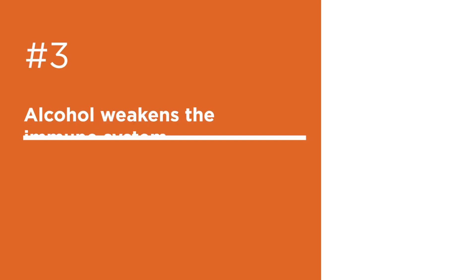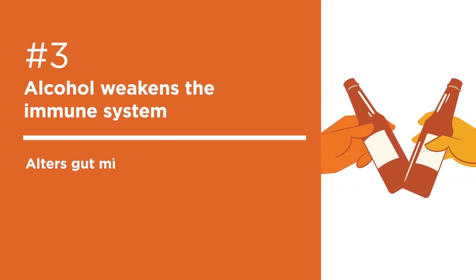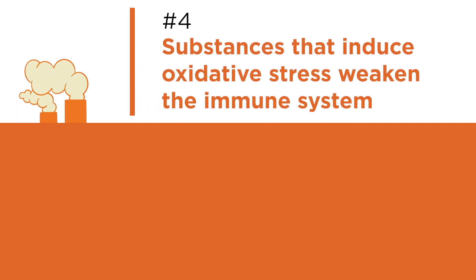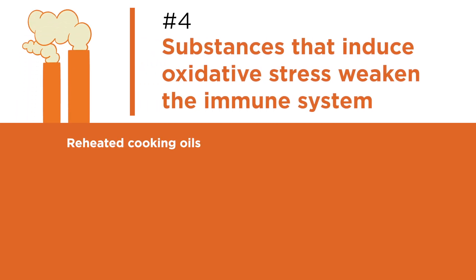Number three: alcohol. Alcohol alters microbes in the gut, which support normal immune function. Chronic alcohol consumption causes bacteria to leak out of the gut, where it triggers inflammation in other organs like the liver. It also impairs immune cell function in other parts of the body, including the lungs. According to researchers, this damage is often undetected until a respiratory illness becomes more severe than in non-drinkers.